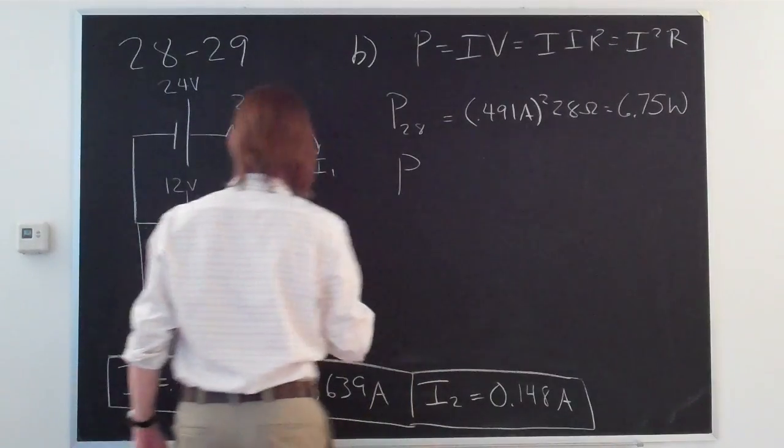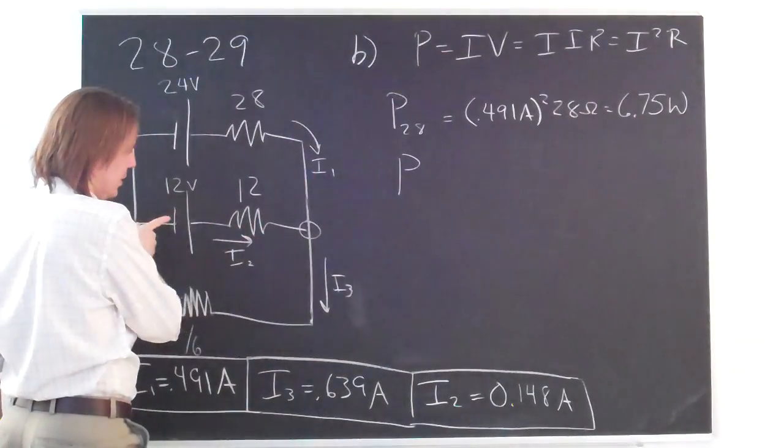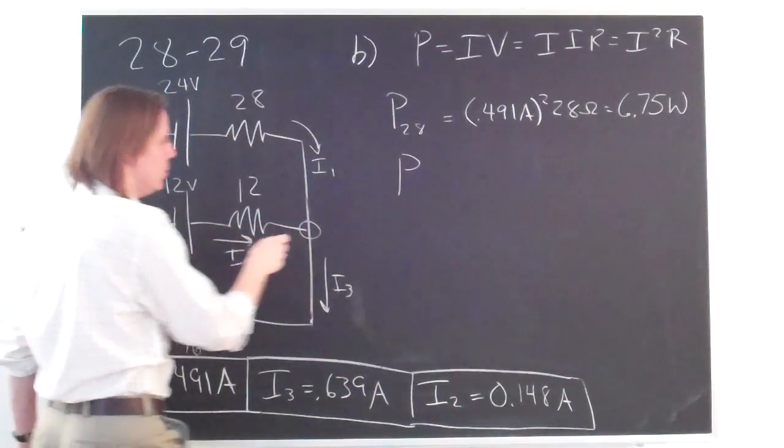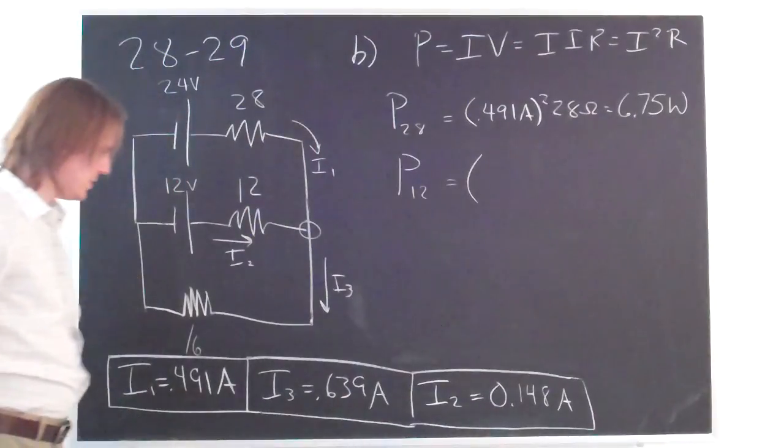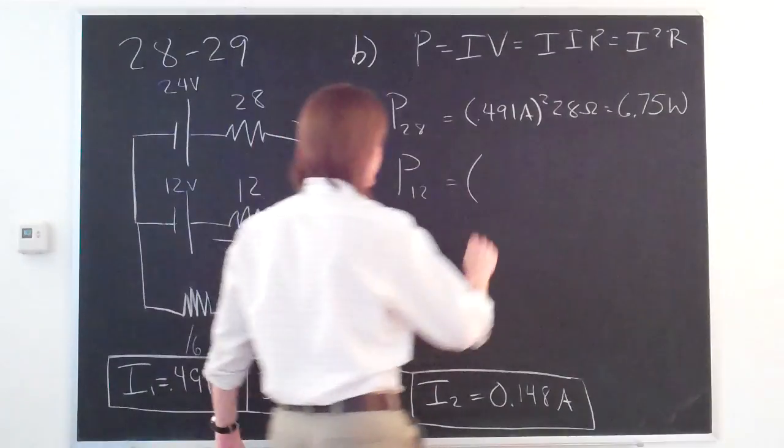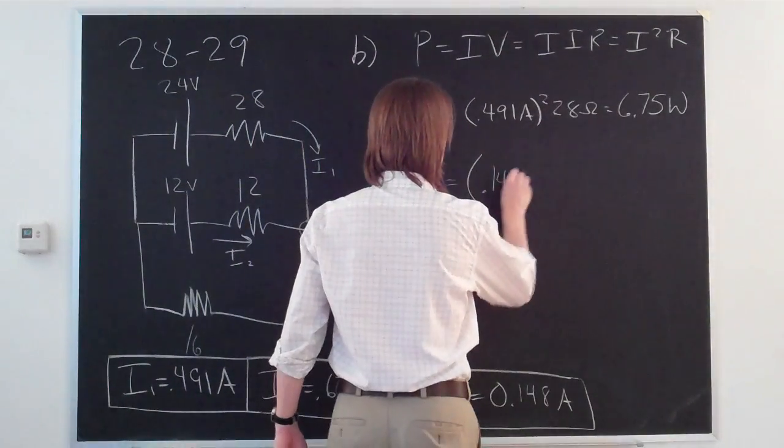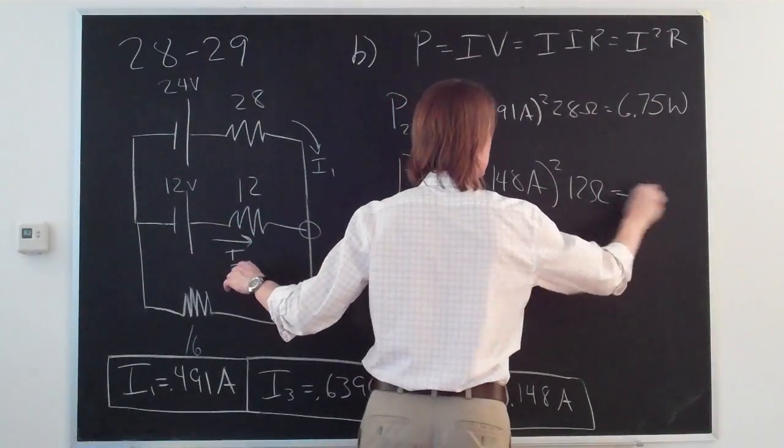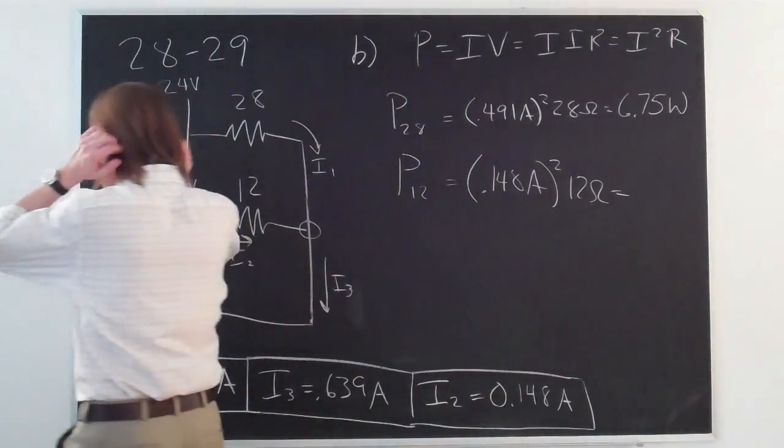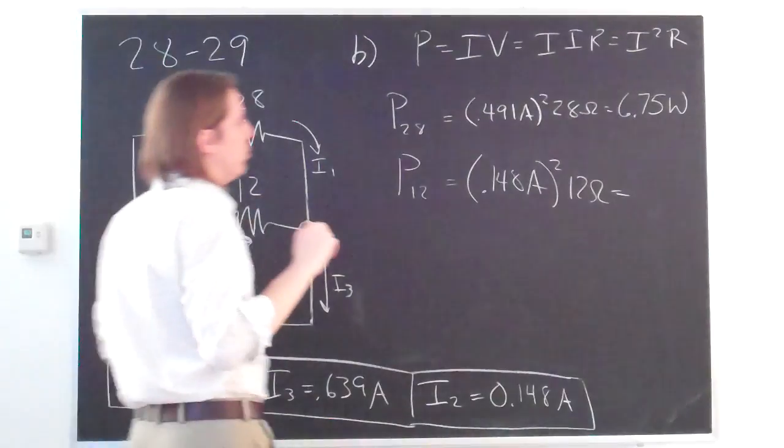And the power dissipated in the 12 ohm resistor is based on I2. So I2, 0.148 amps squared times 12 ohms. And that is smaller, that is 0.263 watts.